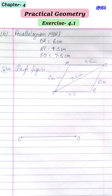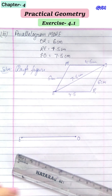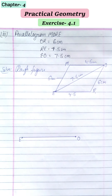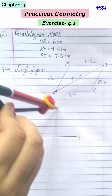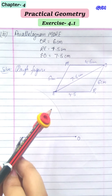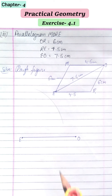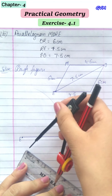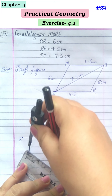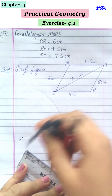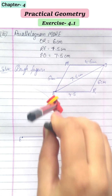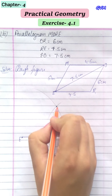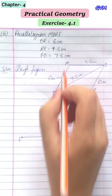Take the ruler and compass, put the needle at zero, and take 6 cm. Put the needle at E and draw a large arc. From O, take 4.5 cm measurement with the ruler and compass. Put the needle at O and draw that arc. The intersecting point of these two arcs is point M. Join EM and OM.